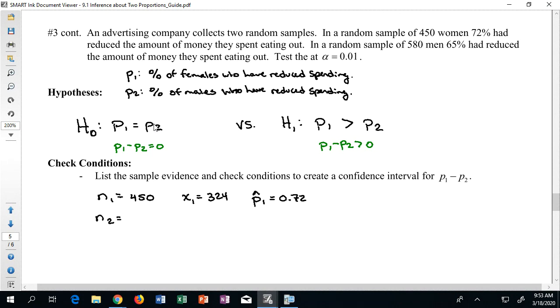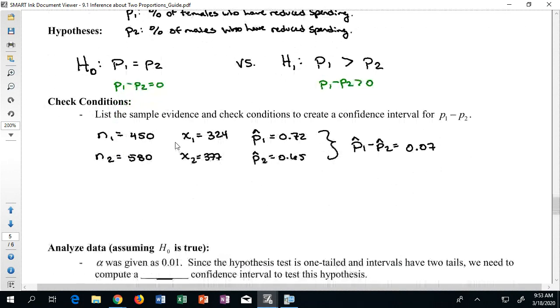We know that for N2, that's 580 men. You should have been able to discover that it was 377 men that reduced their spending, and P hat two was already given at 65%. We want to combine these to say that P hat one minus P hat two right now comes out as 0.07, so a 7% difference.